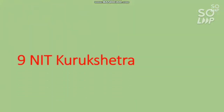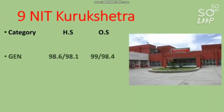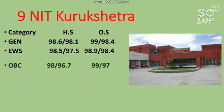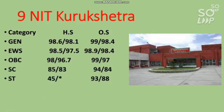Number nine NIT is NIT Kurukshetra. Here is the EC branch cutoff: for General 99 percentile, for EWS 98.9, for OBC 99 percentile, for SC 94 percentile, and for ST you need to score at least 93 percentile to get a seat in EC branch in NIT Kurukshetra.